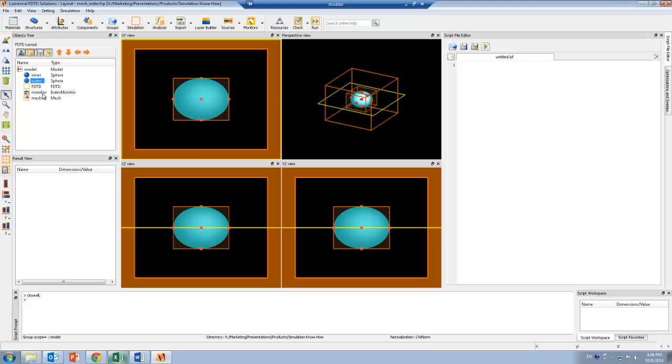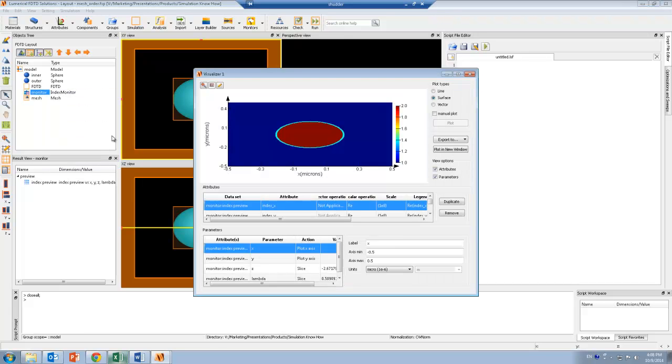So we can verify this by looking at the output from the index monitor. And I don't actually have to run any simulations to see the index preview. So here you can see that indeed I have a core-shell structure.